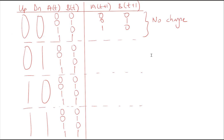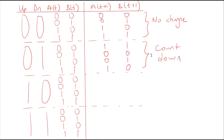In the second section, if up is 0 and down is 1, we will count down. From state 0,0 we go to 1,1. From state 0,1 we go to 0,0. From state 1,0 we go to 0,1. And from state 1,1 we go to 1,0.